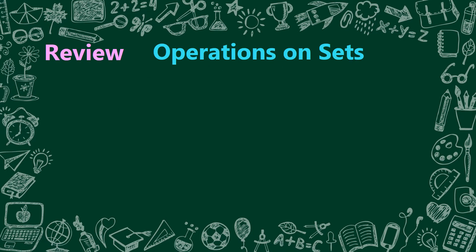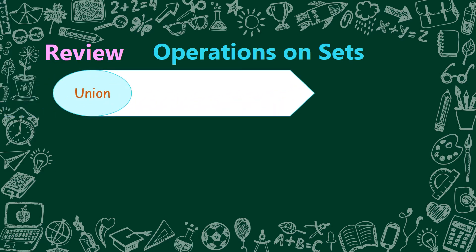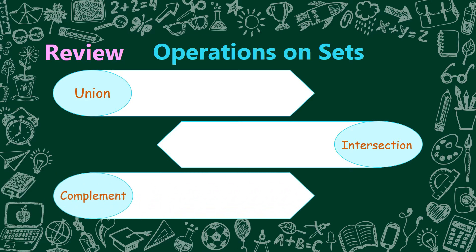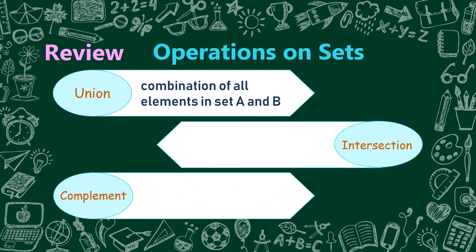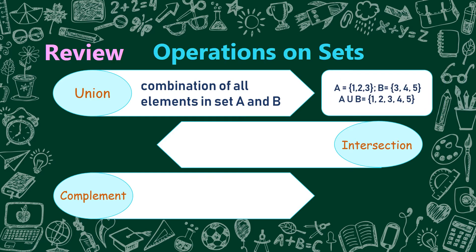Let us have a quick review about operations on sets. We have the union, intersection, and the complement. Union: the combination of all elements in set A and B. Example: set A is equal to {1, 2, 3}, set B is equal to {3, 4, 5}. A union B is equal to {1, 2, 3, 4, 5}. Sa union, pagsasamahin lang natin ang lahat ng elements sa given set.